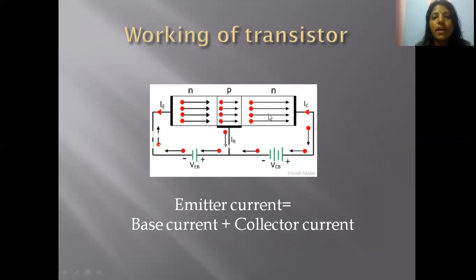The emitter and collector currents are nearly equal. The value of IC is less than IE, but both values are not much different. However, the base current is very small compared to the emitter and collector currents. The relation between the currents is: emitter current equals base current plus collector current.